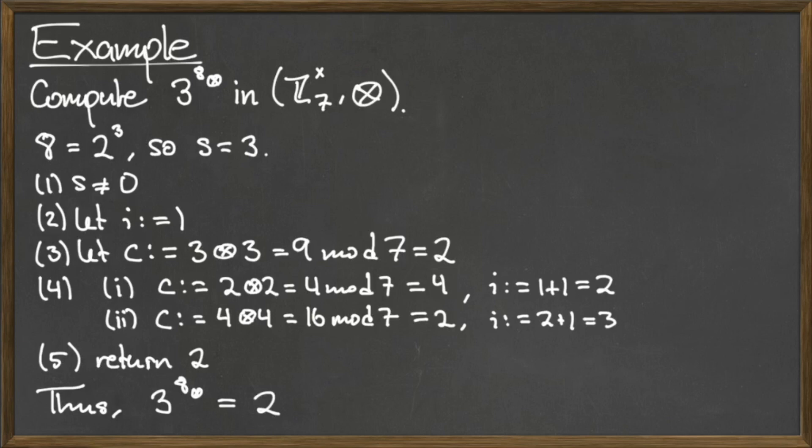Now we'll enter the repeated squaring algorithm. Our s value is not equal to 0, so we skip step 1 and proceed to steps 2 and 3, where we create the variable i and assign it the value of 1, and create the variable c and assign it the value of 3 circle times 3, which is equal to 9 mod 7, which is equal to 2.